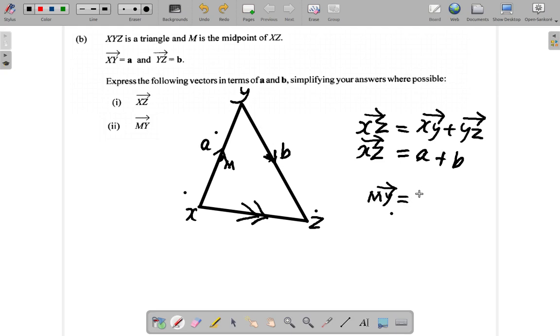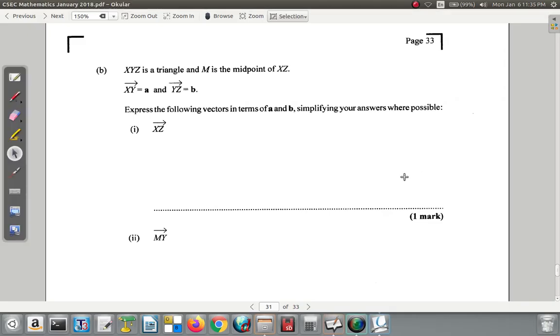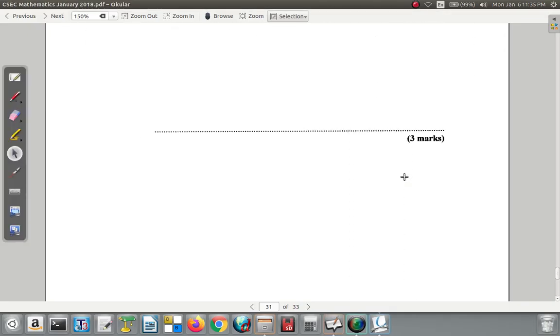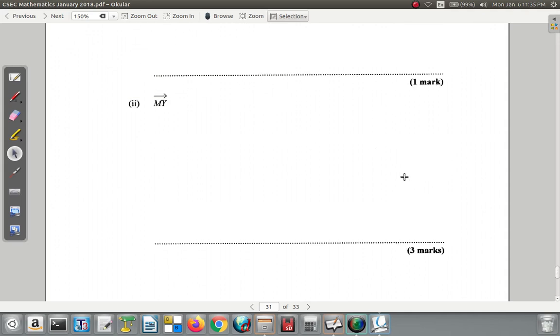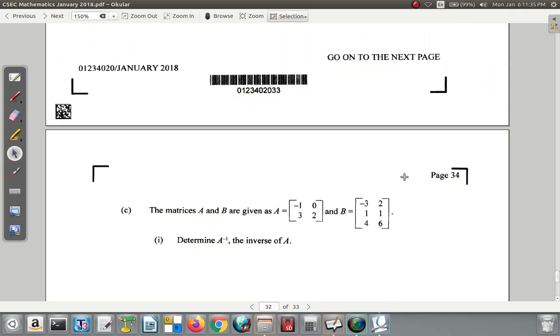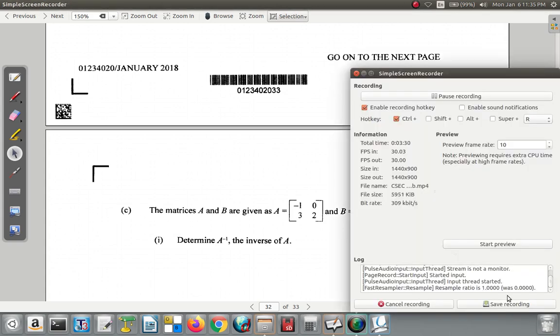You see, since it's a midpoint, MY would be half of XY. Halfway from X going to Y. But what is XY? It's A. So it's half A. So MY is equal to half A. What else do they want? Oh, the next part is C. Let's deal with C later on. Good.